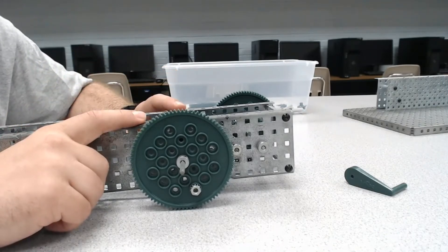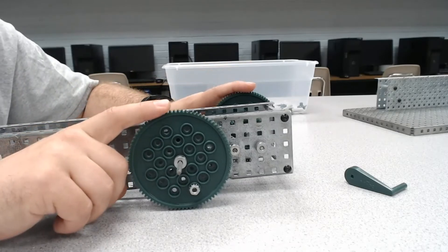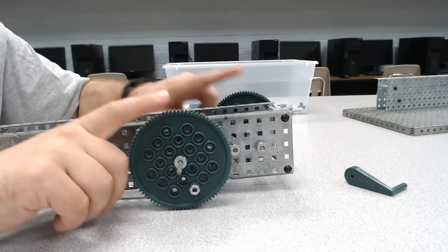In this system, what we've got is a compound gear system. We have two 84-tooth gears here, but they're on opposite sides of our system.